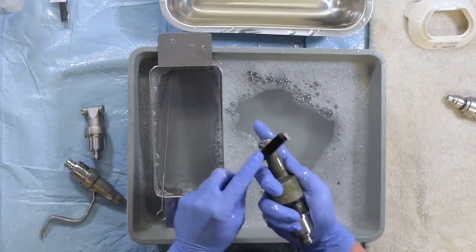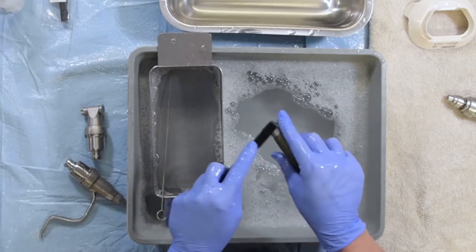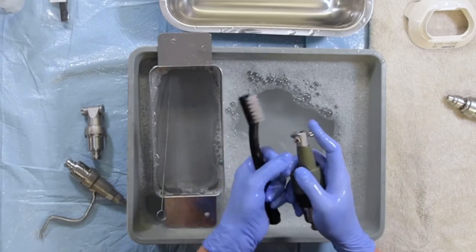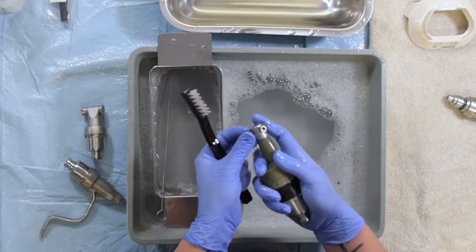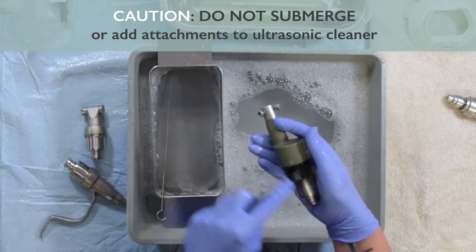Make sure to clean in and around all of your set screws on your TPLO attachment. If necessary, these can be removed and put into your ultrasonic cleaner. Do not submerge or put any of your actual sagittal attachments into your ultrasonic cleaner.